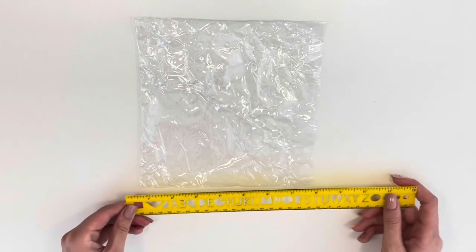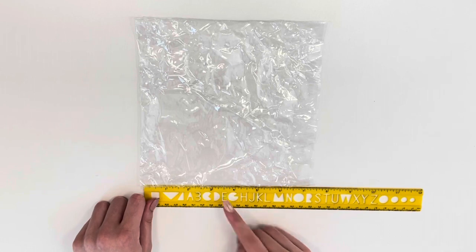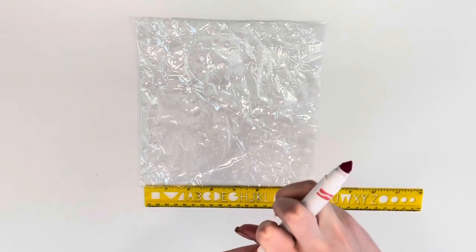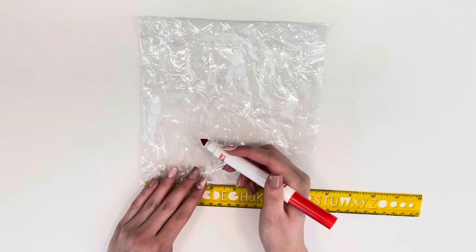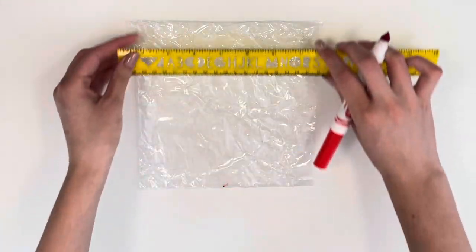Since we're making a water snake, we need to measure out how big we want it to be. So this bag is clearly too big. I'm going to take my ruler. I think I'm going to make it like three and a half inches long. I'm just going to mark it with this washable marker. I prefer to use a washable marker so it can easily come off.